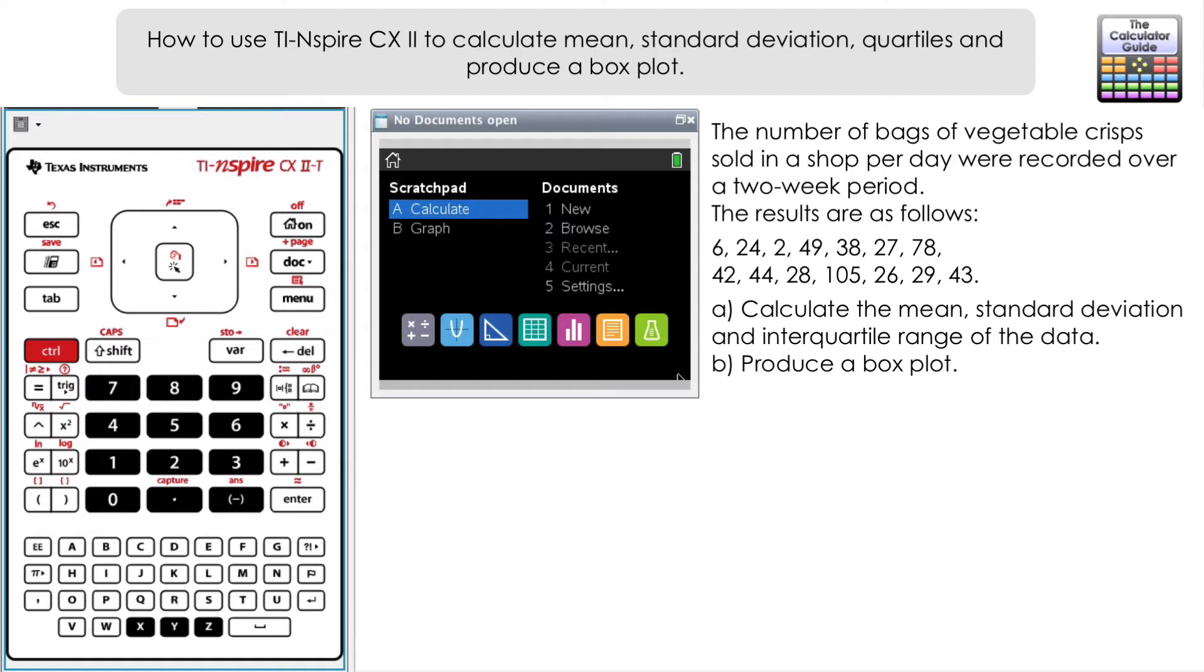Let's take a look at the question. The number of bags of vegetable crisps sold in a shop per day were recorded over a two-week period and the results are as follows. For Part A, calculate the mean, standard deviation and interquartile range of the data, and then B, produce a box plot.